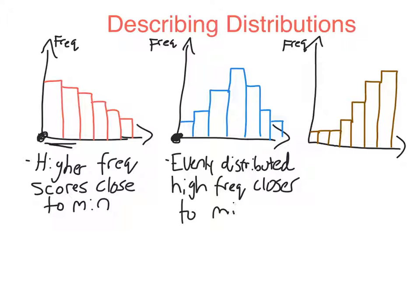And then in the last one, the brown one, you can see it's the opposite of the red one. So there's a higher frequency of scores, these bars here, higher frequency of scores closer to the maximum score. So, of course, the maximum score is here because this is ordered.